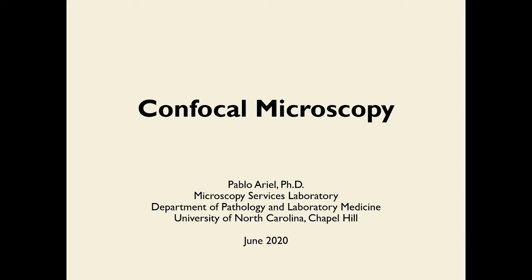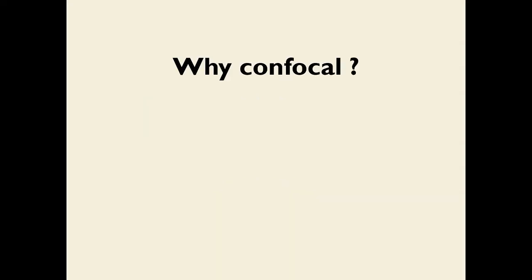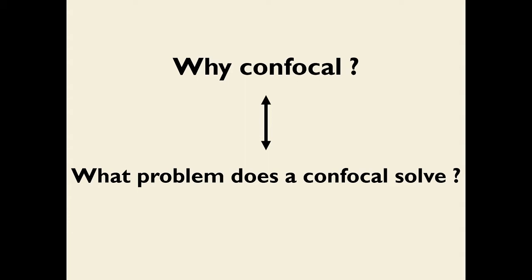This is a lecture on confocal microscopy. It will give you a sense of some of the theory behind this kind of microscopy, its advantages, and its limitations. To understand why to use a confocal, we need to think about what problem it solves. We'll use wide-field fluorescence microscopy as a reference, describe how it forms an image, and then compare and contrast it to confocal microscopy.